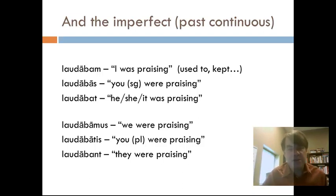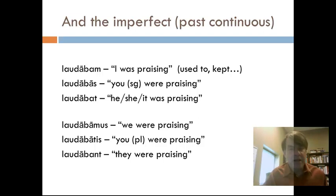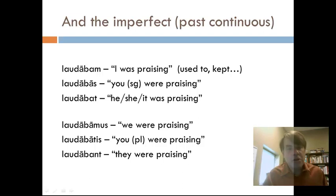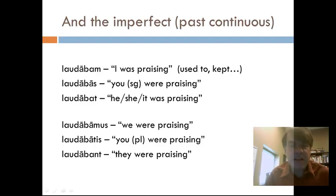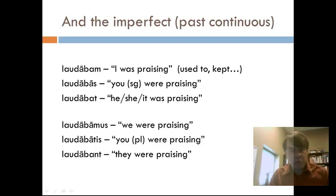The imperfect can also translate as 'I tried to praise' or 'I began to praise' in some contexts. Get a feel for what it seems to be saying — get in touch with your inner Roman. So: the future tense is 'I will praise,' and the imperfect tense is 'I was praising.' Read the book.